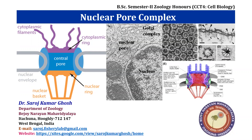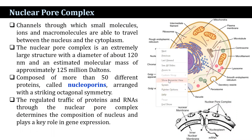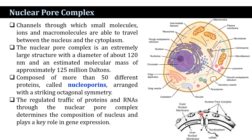The nuclear pore complex forms the only channels through which small molecules, ions, and macromolecules — whether proteins or RNAs — are able to travel between the nucleus and cytoplasm, or cytoplasm to nucleus. The nuclear pore complex is an extremely large structure with a diameter of about 120 nanometers and a molecular mass of approximately 125 million daltons, which is about 30 times larger than ribosomes.